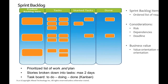The product backlog is input to the sprint planning session. In sprint planning, the team picks items from the product backlog and these become items in what's called the sprint backlog — the items they're going to address in the sprint. They take those stories and break them down into more detailed tasks. Each task really shouldn't last longer than two days; if it does, you need to break it down even more.